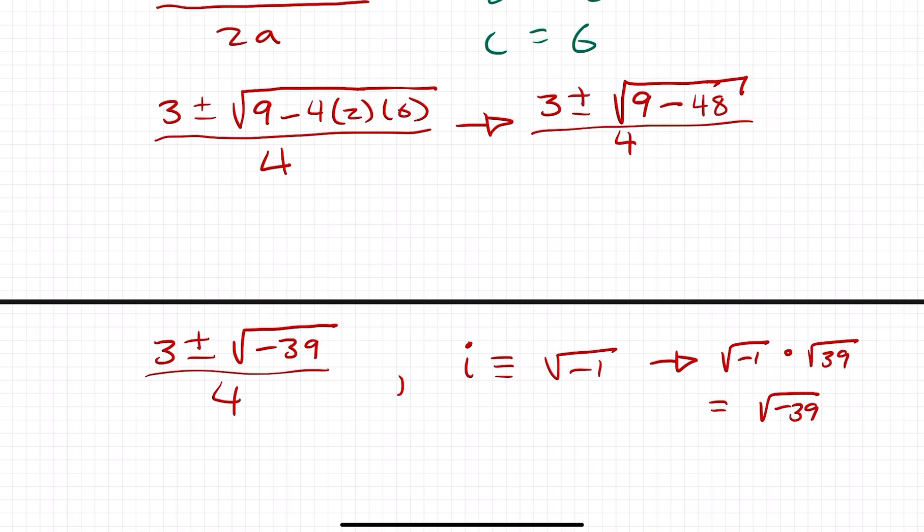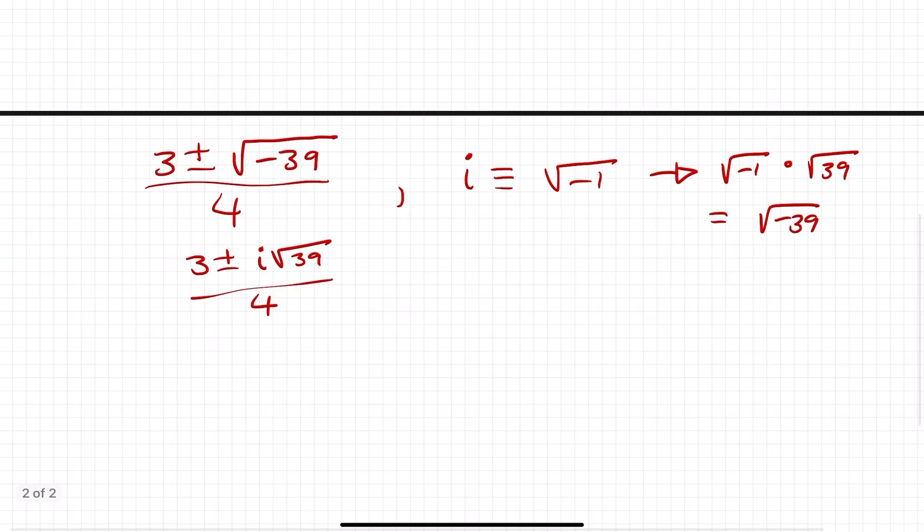All right. So, the way I'm going to go ahead and write the next step is going to be 3 plus or minus i square root 39 all over 4. And for some teachers, some situations, some exams, that might be exactly the way that the answer is listed.